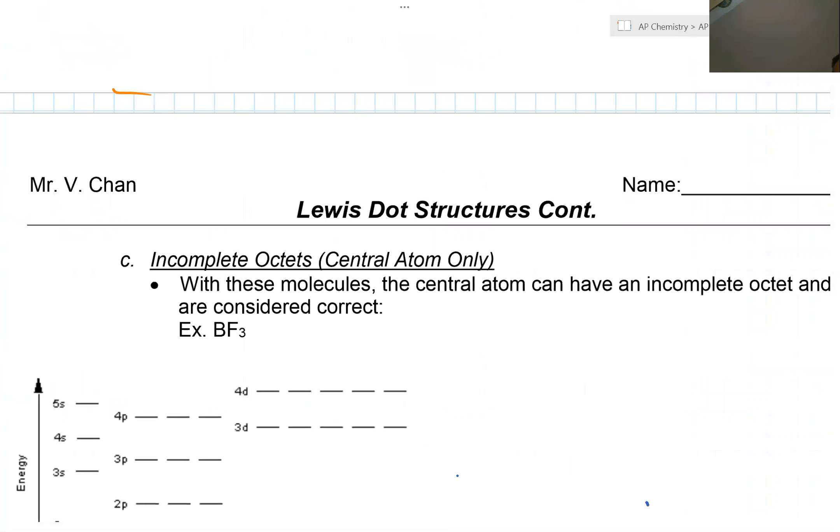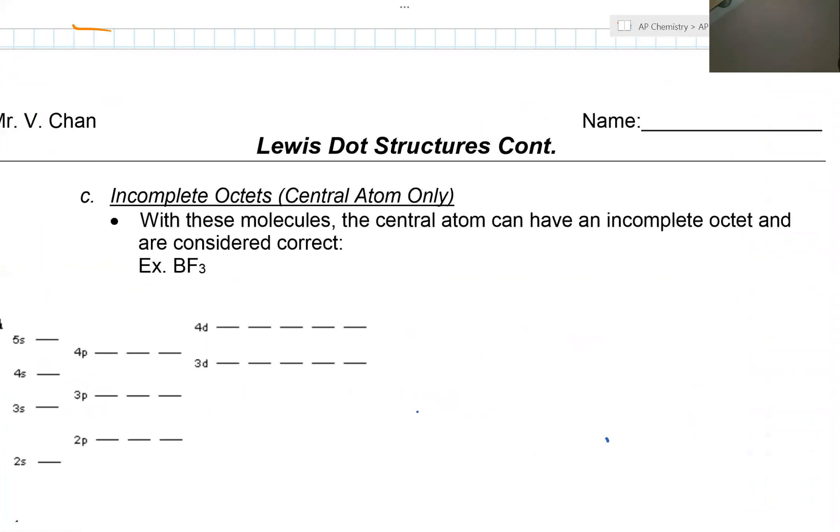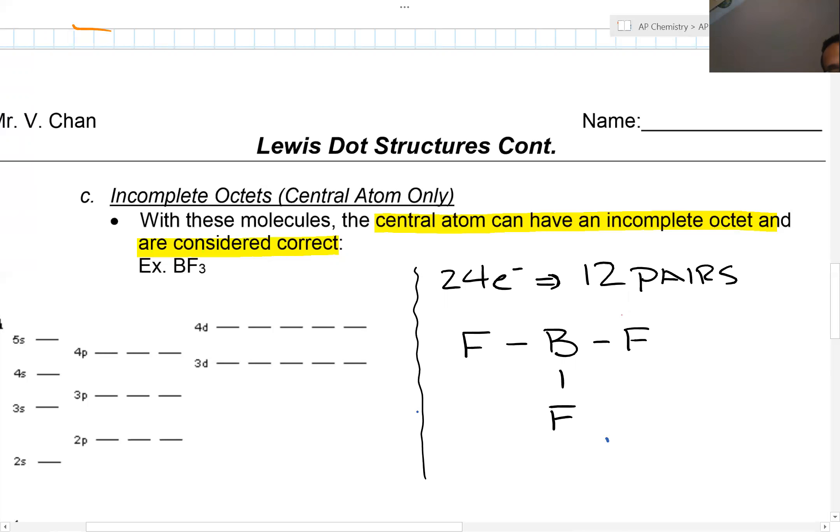Incomplete octets, the central atom only. In these molecules, the central atom can have an incomplete octet and are considered correct. Let's take a look at boron trifluoride. If we look at boron trifluoride, boron has three, trifluoride is 21, there's 24 electrons. So what you have is you have 12 pairs. So when you draw it, you have fluorine, boron, fluorine, and fluorine.